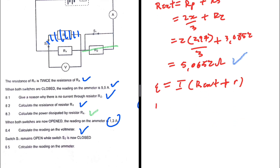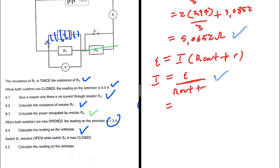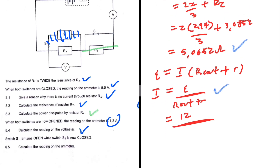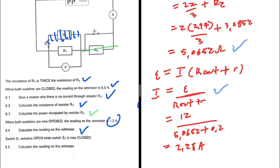The current equals EMF divided by R external plus R internal. Substituting: current equals 12 divided by (5.0652 plus 0.2), which is 12 divided by 5.2652. This gives 2.279, rounded to 2.28 amperes. That is the reading on the ammeter for question 8.5.